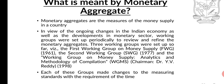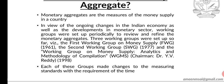In view of the ongoing changes in the Indian economy — in the monetary sector, the financial sector — the RBI set up working groups. Three working groups were set up so far. The first working group on money supply, FWG, was set up in 1961.